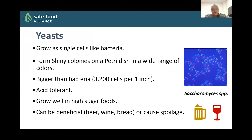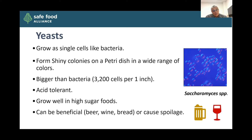Looking at some of these other microbes: yeasts grow as single cells like bacteria and form a shiny colony on a petri dish. They are much bigger than bacteria — there are 3,200 cells of yeast per inch compared to 13,000 E. coli. They're often fairly acid tolerant and grow well in high sugar foods. So if your food has a more acidic pH and fairly high sugar content, this is one of those organisms you have to think about — particularly with regards to spoilage. Of course they can also be very beneficial, because products like beer, wine, and bread are produced by yeast creating the necessary changes and flavors. However, if those yeasts are growing in a food you don't want converted, it could be a spoilage issue, often manifesting as gas production in a liquid product or a sour or off flavor.